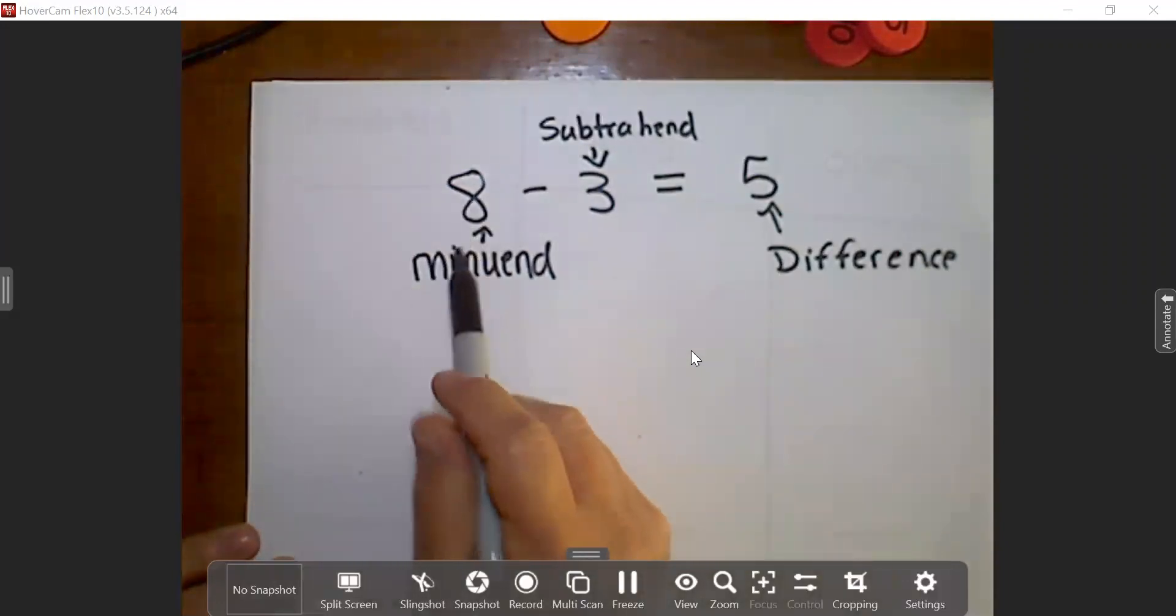Whenever we are subtracting, we always have the biggest number first, and that number is called the minuend.